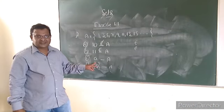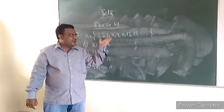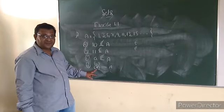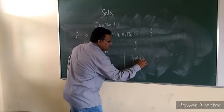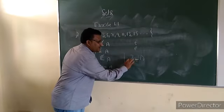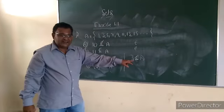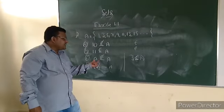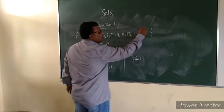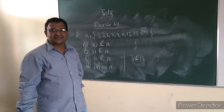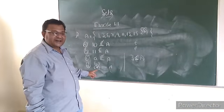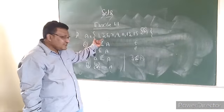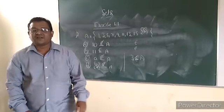A — a letter — is it an element of this set? No. So the appropriate symbol is 'does not belong.' Now, {3} — three kept in flower brackets means it is a set. Element three is there in set A, but set {3} is not an element of A. So the appropriate symbol for {3} is 'does not belong.'